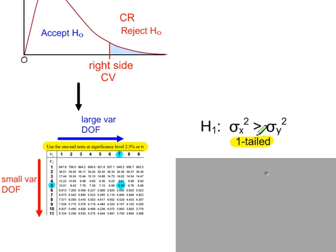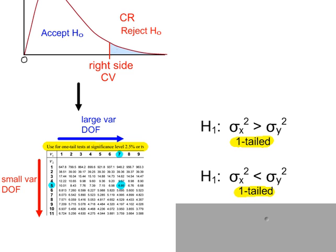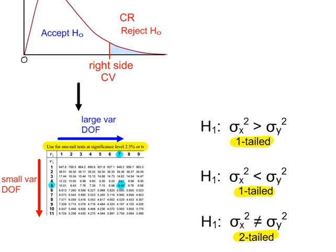We may have a one-tail test or a two-tail test. For each of these, we always look at the right side of the F distribution. Our critical region and critical values are always for the right-hand side and never the left tail.